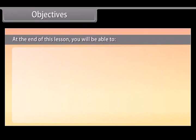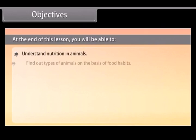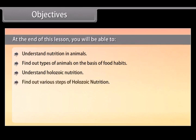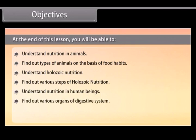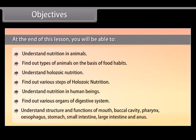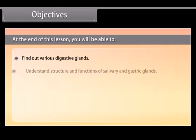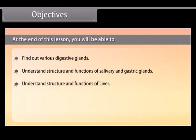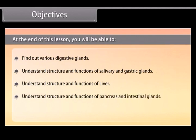At the end of this lesson, you will be able to: understand nutrition in animals; find out types of animals on the basis of food habits; understand holozoic nutrition; find out various steps of holozoic nutrition; understand nutrition in human beings; find out various organs of the digestive system; understand structure and functions of mouth and gastric glands; and study chemistry of digestive glands.